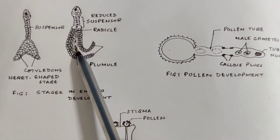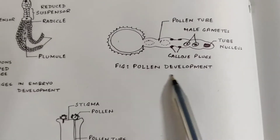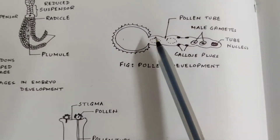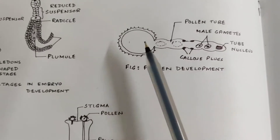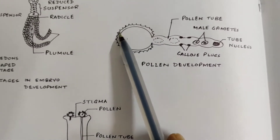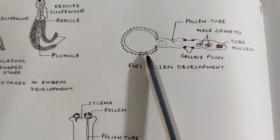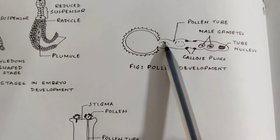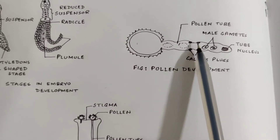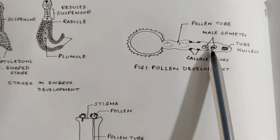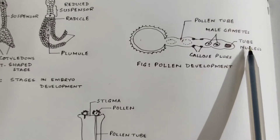This drawing shows pollen tube development. This is the pollen head. These are the callous plugs of the pollen. These two cells are the male gametes and this is the tube nucleus.